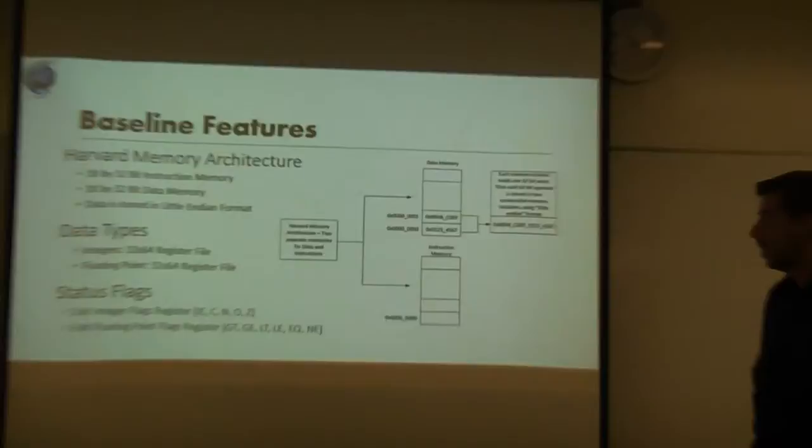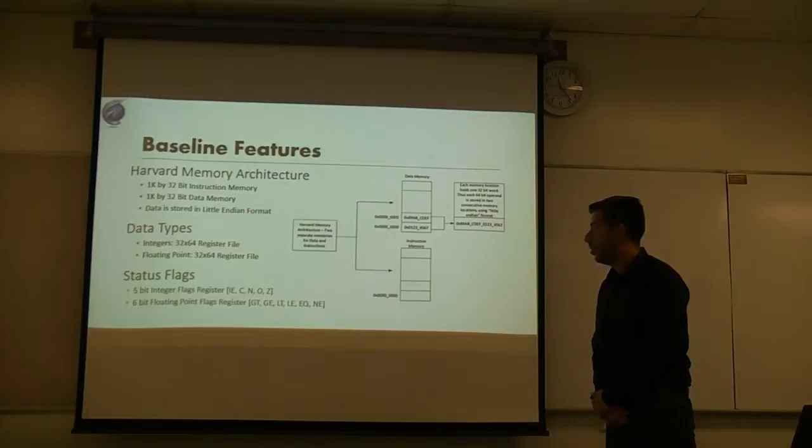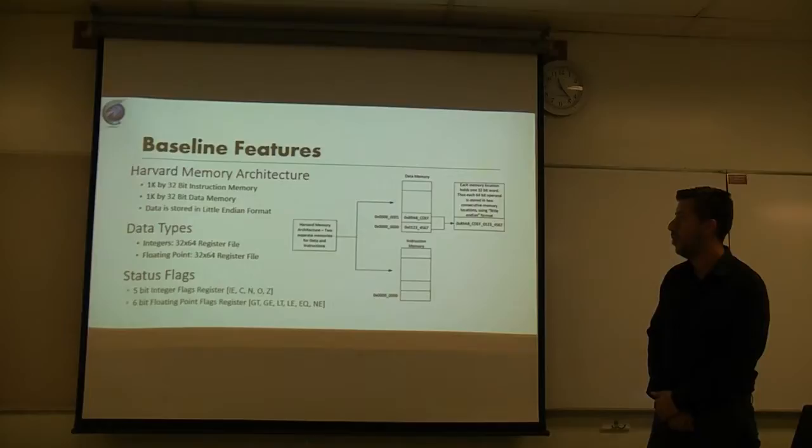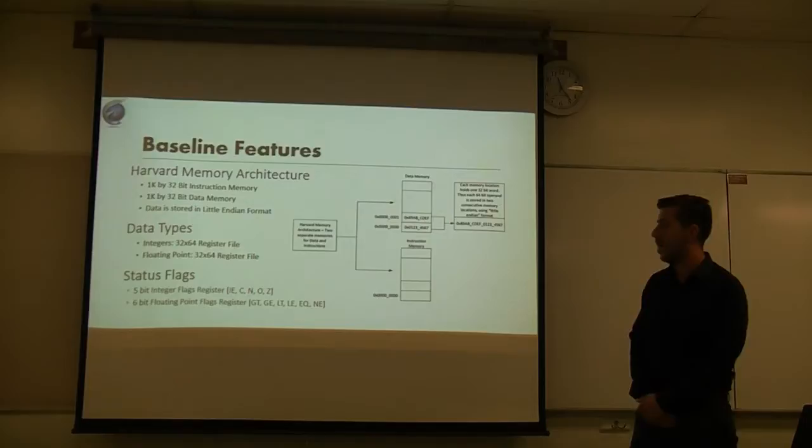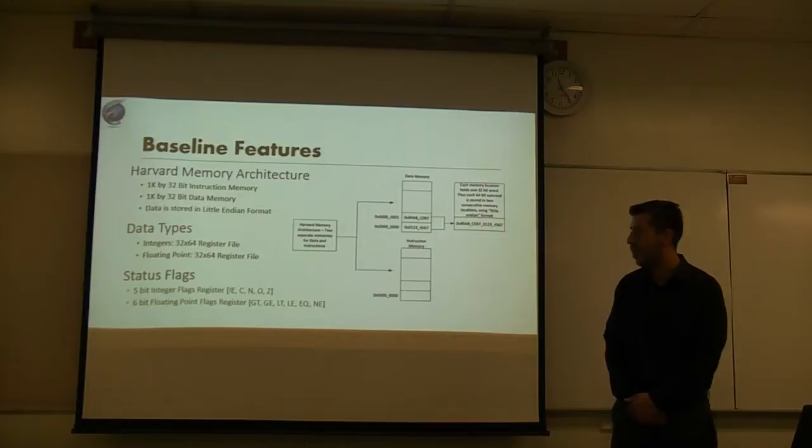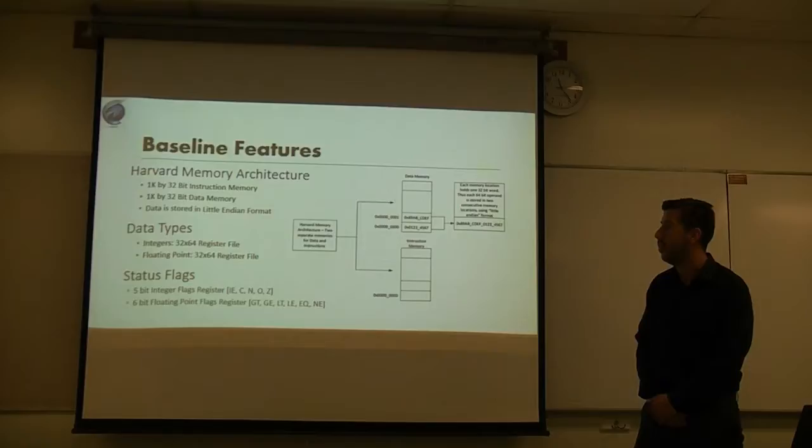For our baseline features, we have a Harvard Memory Architecture, two memory modules for our data and our instruction memory, 1K by 32, and the data is stored in a little Endian format. For our data types, we have 32 by 64 integer and floating point register files, and we have our status flags. We have five integer flags: carry, negative, overflow, and zero, and we have our interrupt label, and we also have six floating point flag registers.